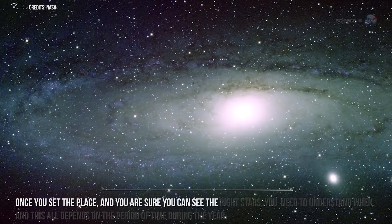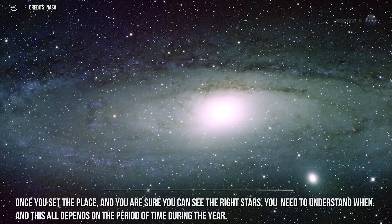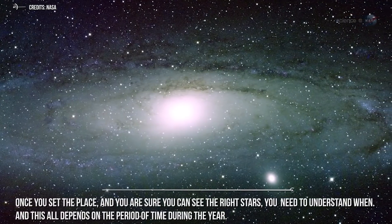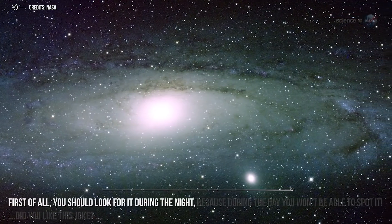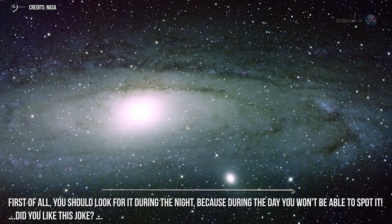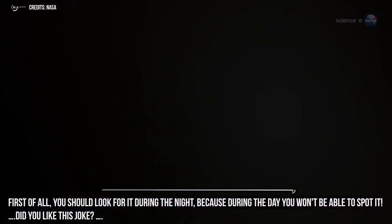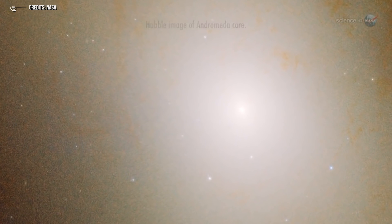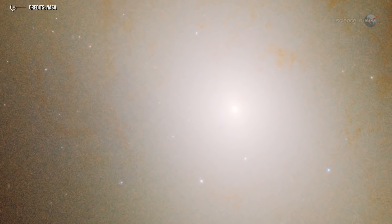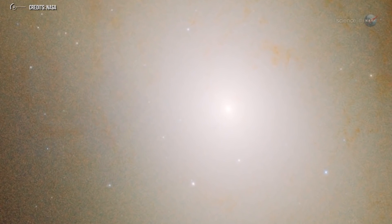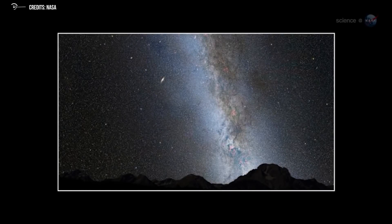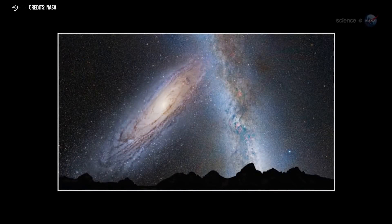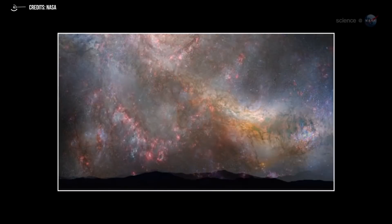Once you set the place, you need to understand when, and this all depends on the period of time during the year. You should look for it during the night. Being serious now, there are some months in which you will have very good observations. As a rule of thumb, if you live in the northern hemisphere, Andromeda is best observed from August to February. Instead, if you live in the southern hemisphere, the best period is from October to December.